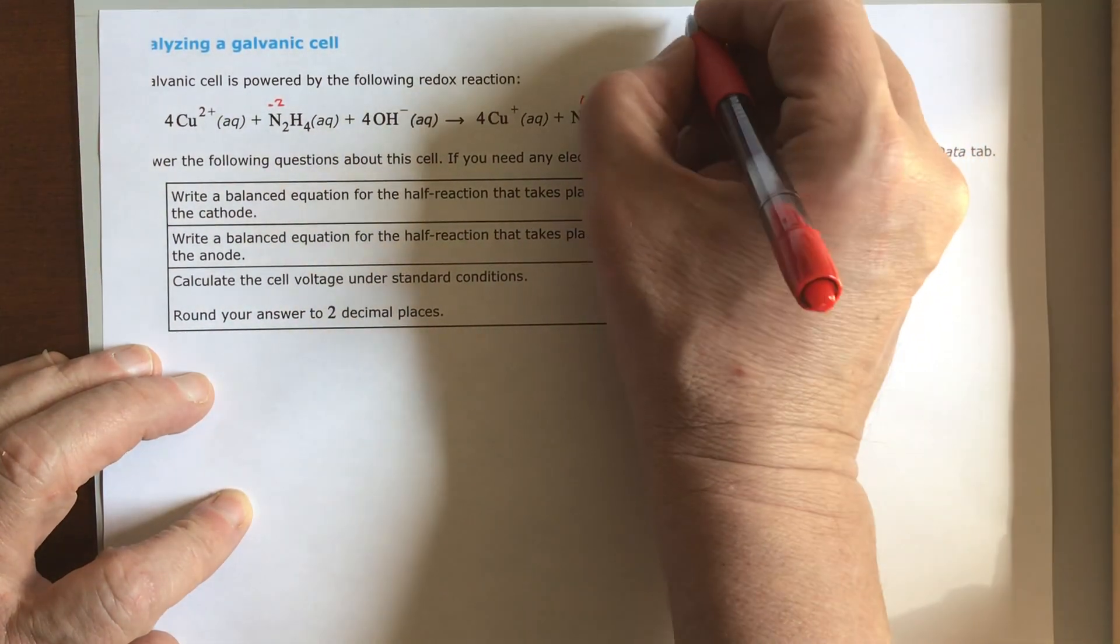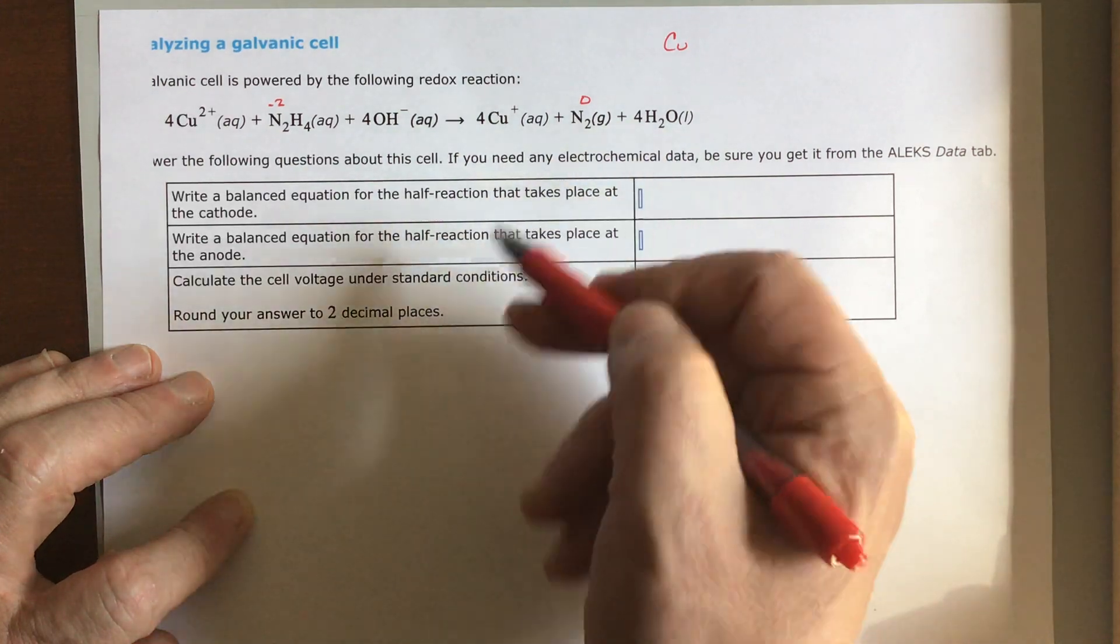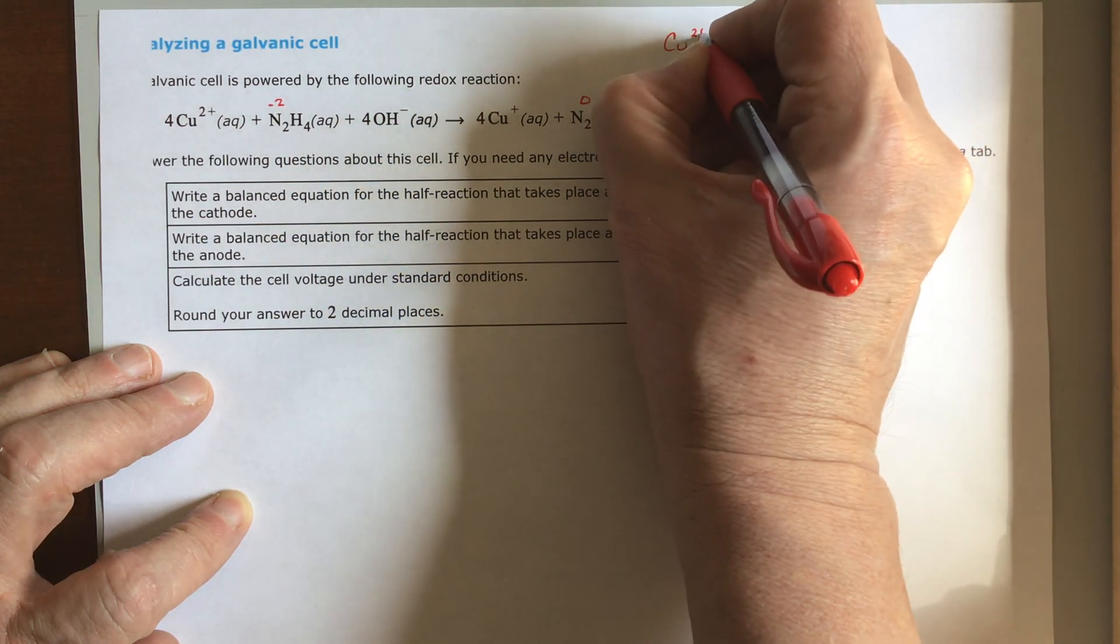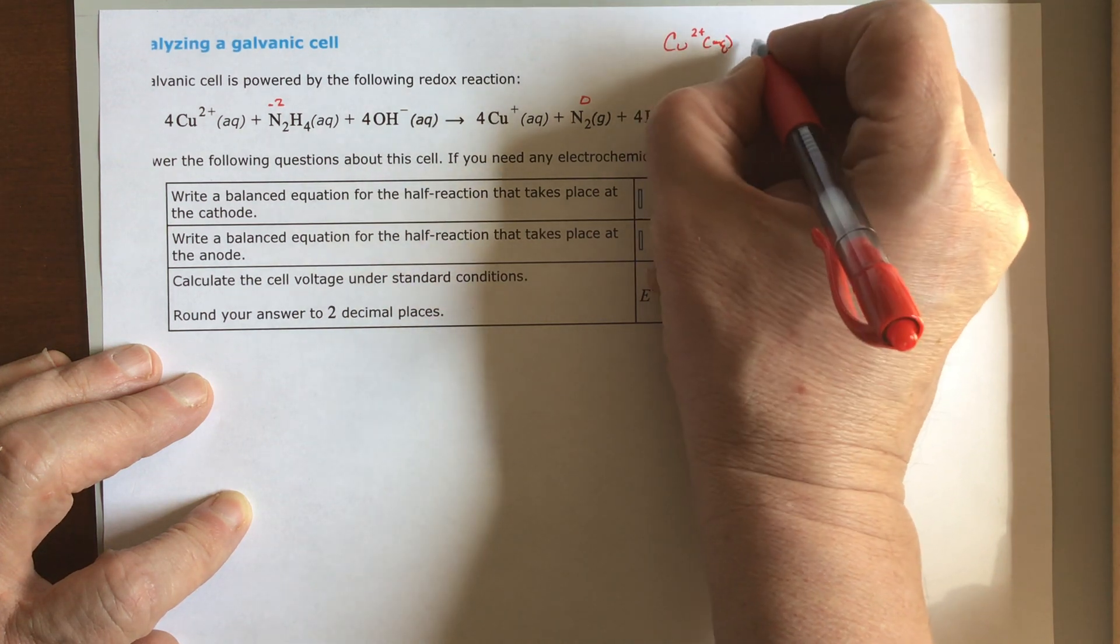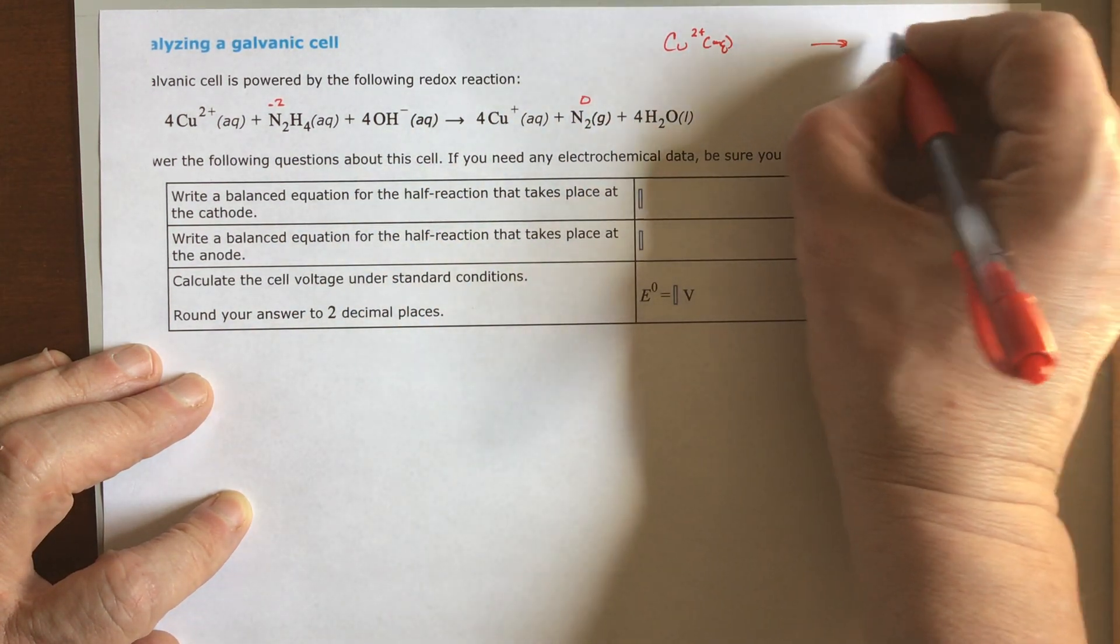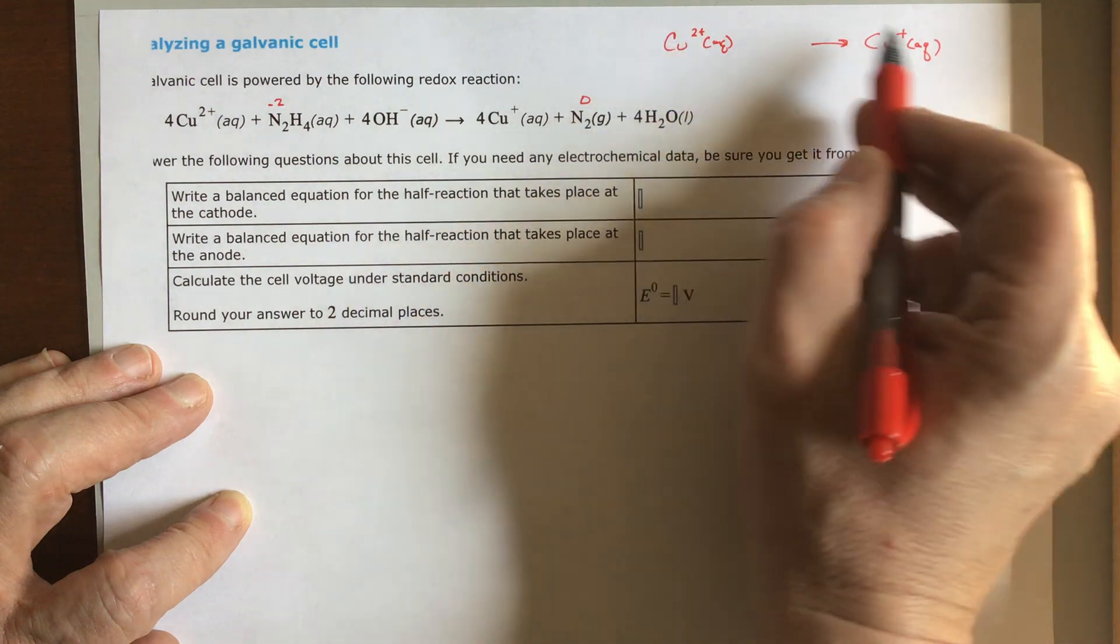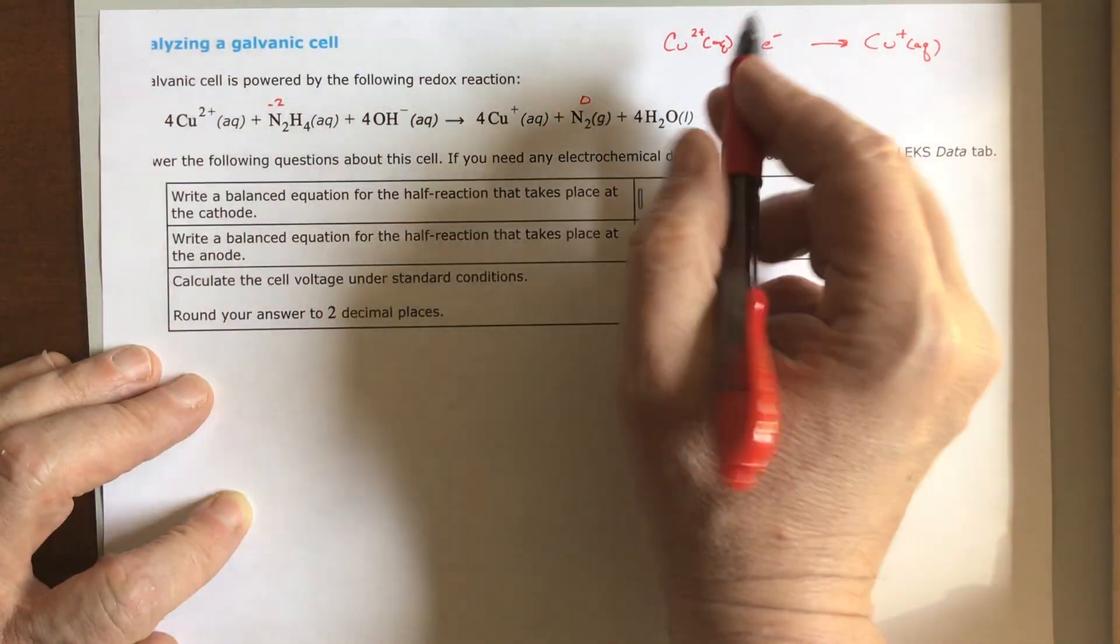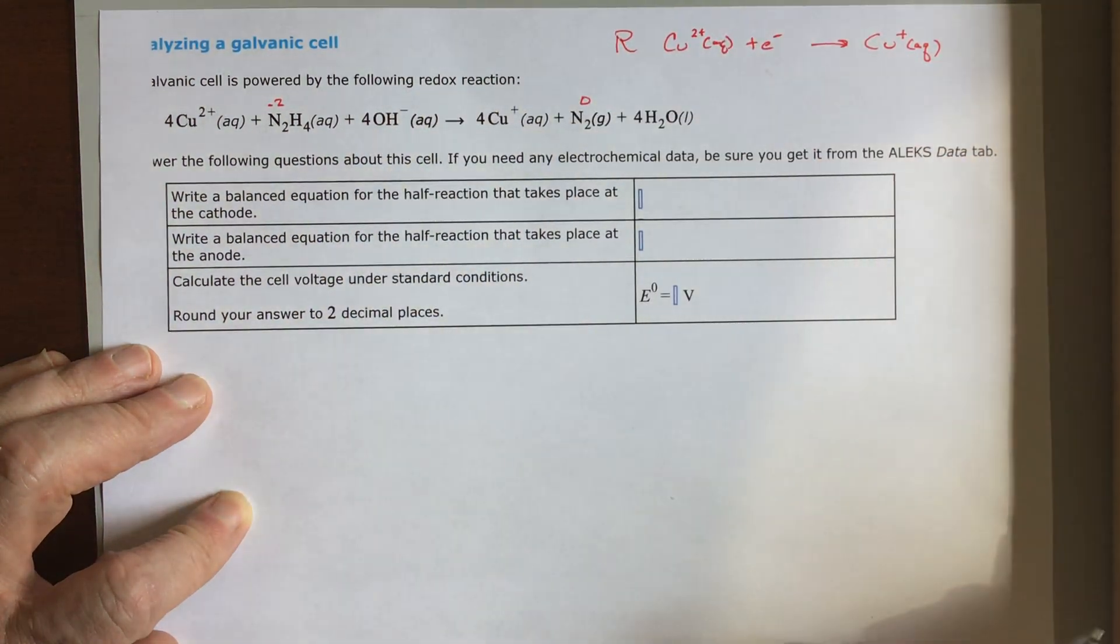So let's first of all do the copper. Don't worry about the balance. The balance is important once you have the entire thing. If you're separating them out, they won't be balanced anymore anyway. So we've got copper two plus aqueous, and I'll leave a space because we're going to have to add or subtract an electron, going to copper one plus aqueous. In order to get from a positive two to a positive one, I'm going to have to add an electron. So this is my reduction stage.